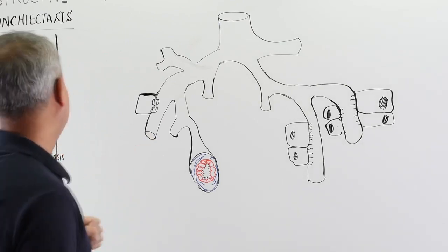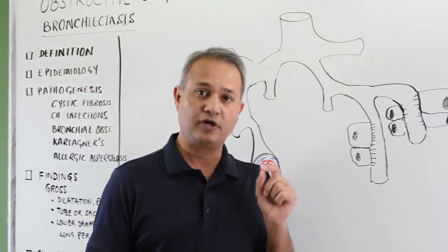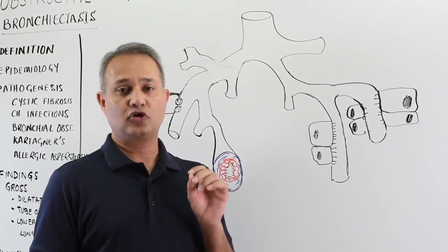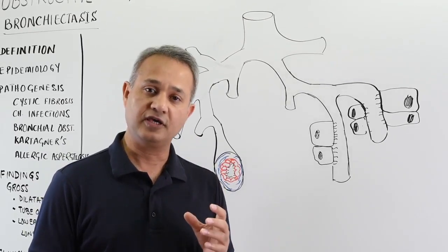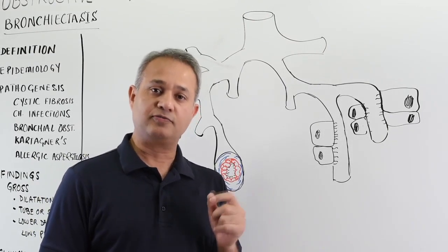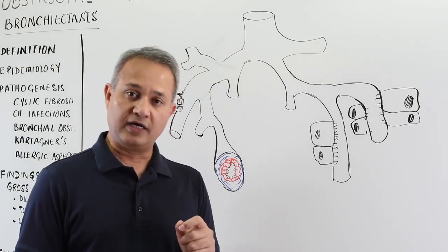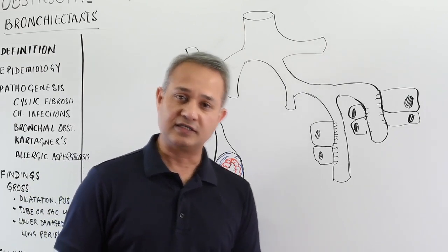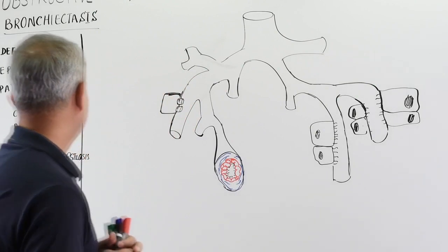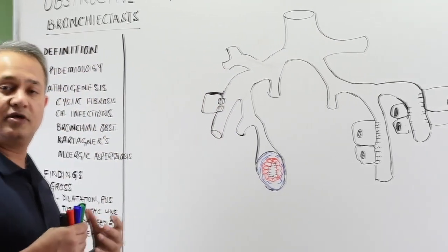Now let's look at epidemiology, which is important from a steps point of view. In the United States, the most common cause of bronchiectasis is cystic fibrosis. Worldwide, the most common cause of bronchiectasis is tuberculosis. Keep that in mind.